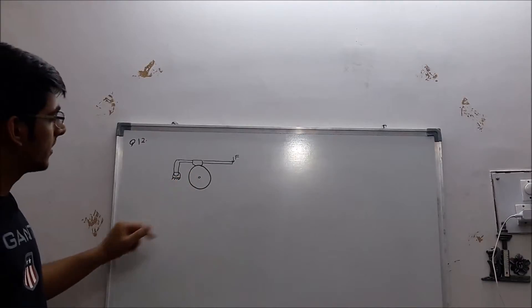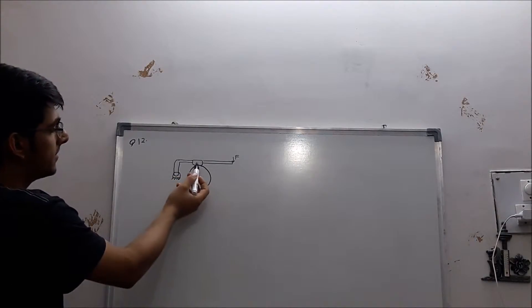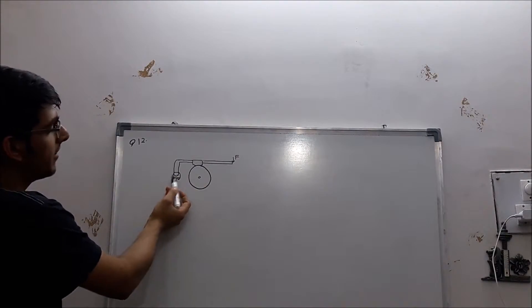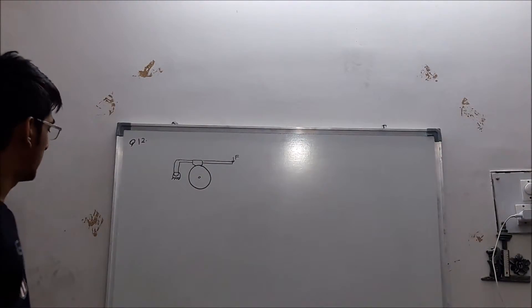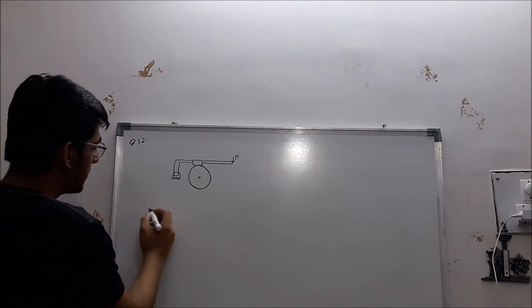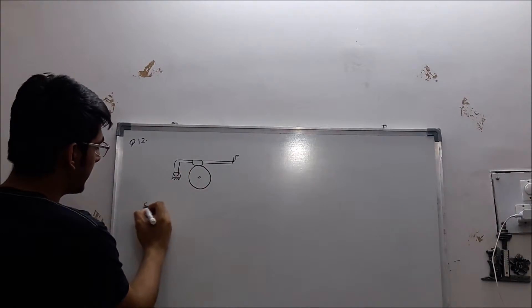In question 12, this is the figure given. This is the drum brake, this is the shoe, this is the pivot, and this is the actuating force which we apply to actuate the brake. Now they have asked when will this brake be self-energizing.